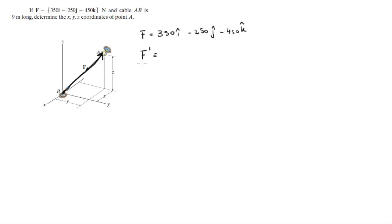We're going to call that a new vector F prime: negative 350i plus 250j plus 450k. This is our new vector, it's aiming this way now.